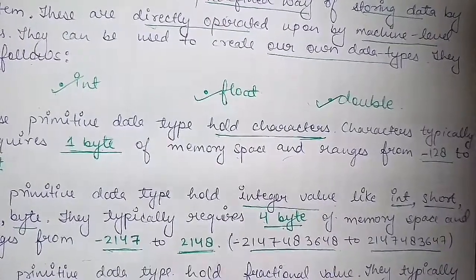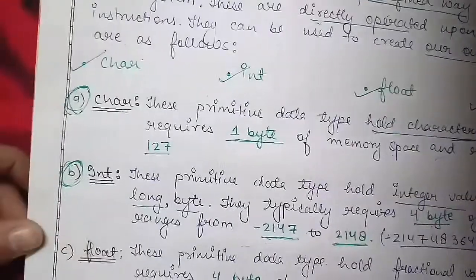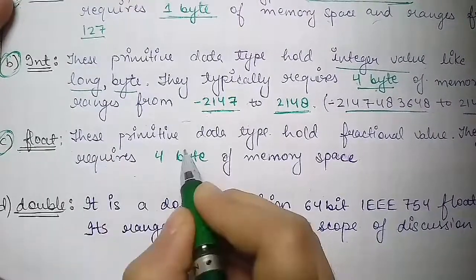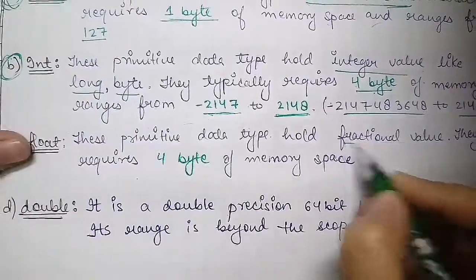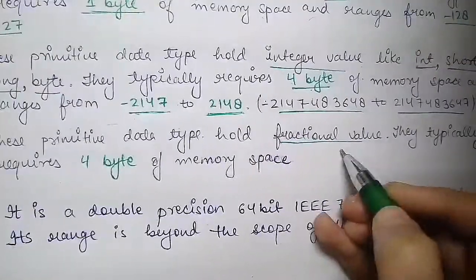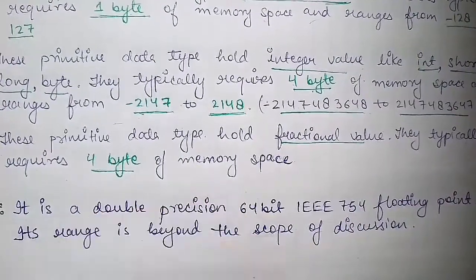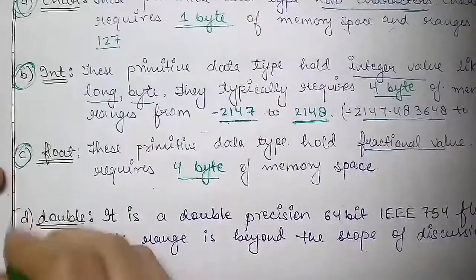Next one is float. These primitive data types hold fractional values. Floats hold fractional values and its space is 4 bytes of memory space.